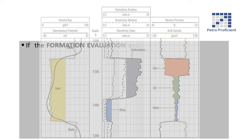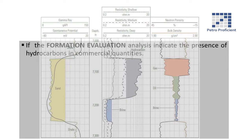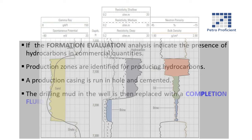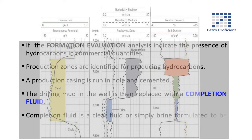If the formation evaluation analysis indicates the presence of hydrocarbons in commercial quantities, production zones are identified for producing hydrocarbons. A production casing is run in hole and cemented. The drilling mud in the well is then replaced with a completion fluid. Completion fluid is a clear fluid, or simply brine, formulated to be non-damaging to prevent producing formations from getting damaged.